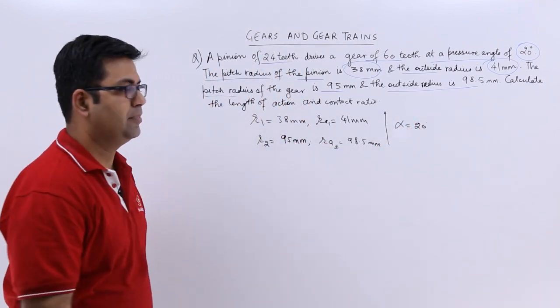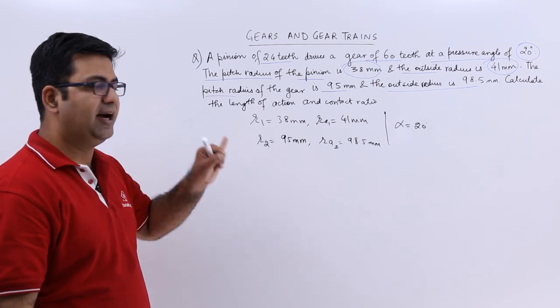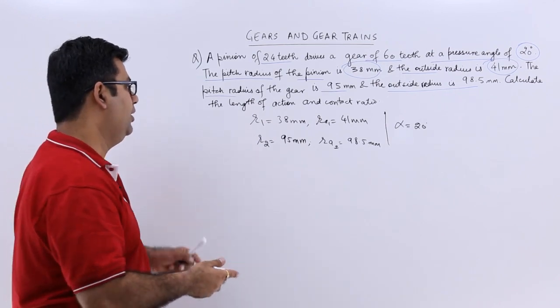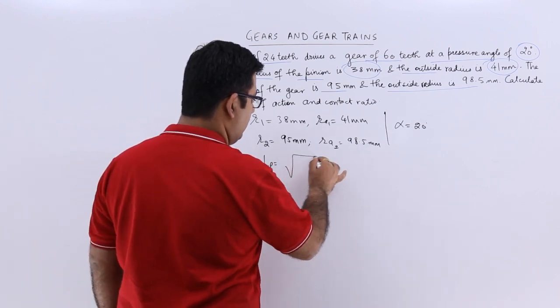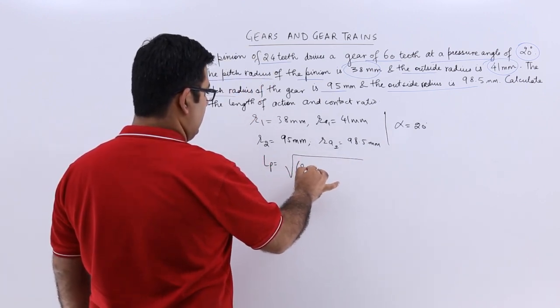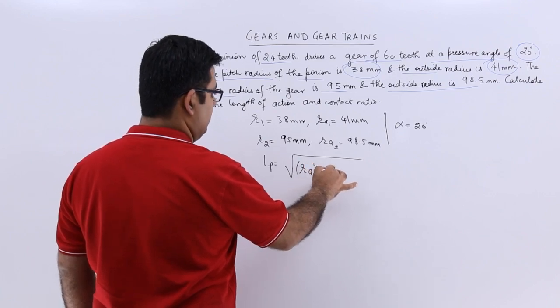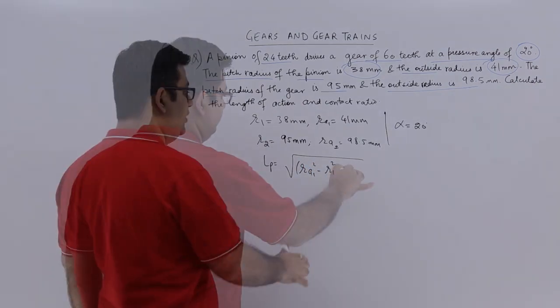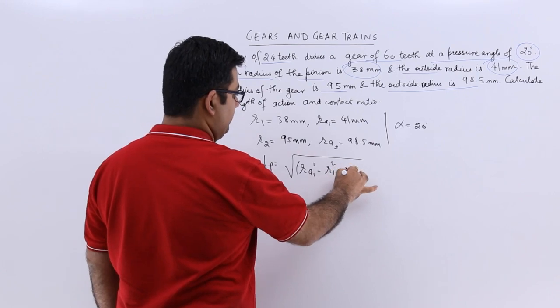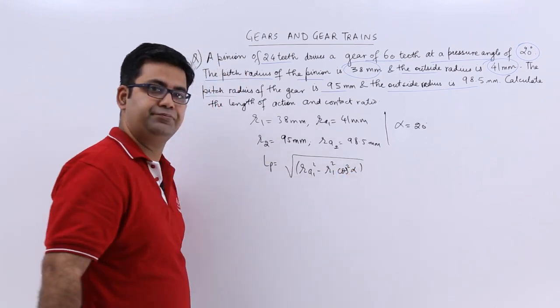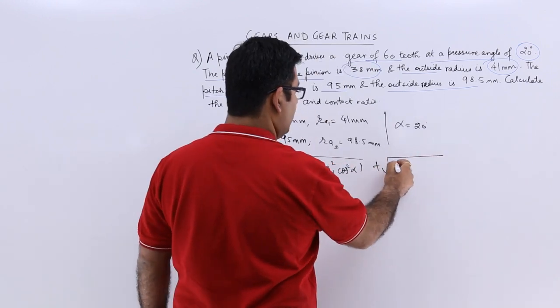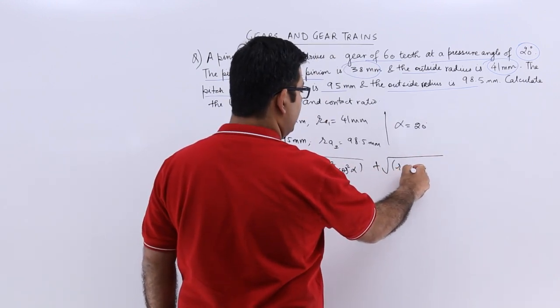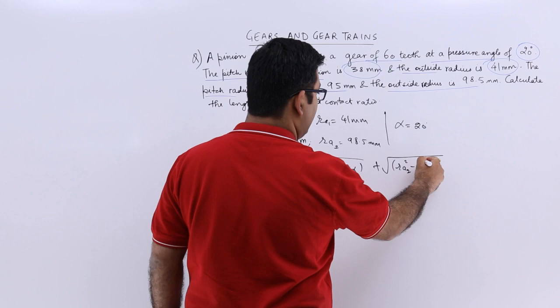So the length of path of contact LP is under root RA1 square minus R1 square cos square alpha plus RA2 square minus R2 square cos square alpha.